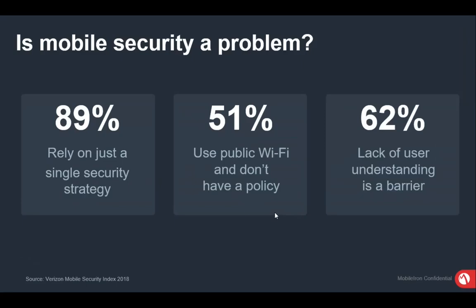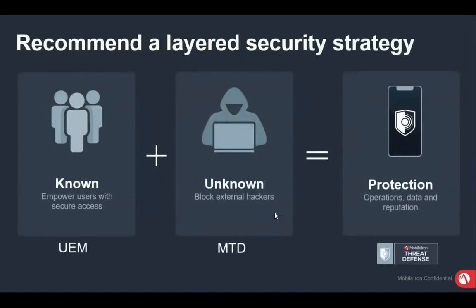89% of users rely on a single security strategy — they have a perimeter firewall and a WAF in place, and they're okay with whatever security is provided by that perimeter. 51% of users are using public Wi-Fi without a secure policy to verify whether it's genuine, and 62% of users don't know the security issues that can happen behind unsecured or untrusted Wi-Fi.